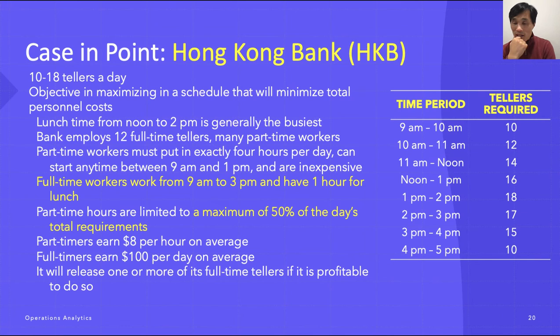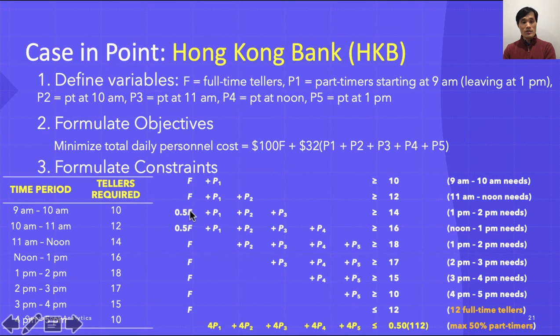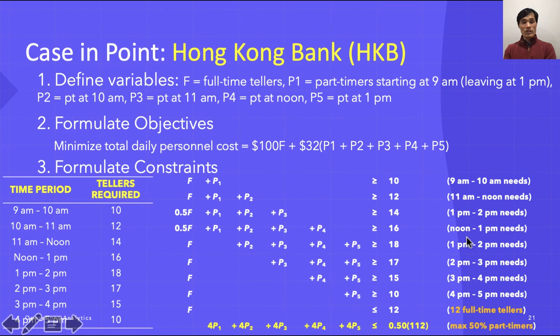50 percent of full-timers have lunch at 11 AM to noon and another 50 percent have lunch from noon to 1 PM. So 50 percent of them are working between 11 and 12. There is a typo in the slide — where it says 11 AM it should be 10 AM. From noon to 1 PM, the constraint is 0.5F + P1 + P2 + P3 + P4 ≥ 16.